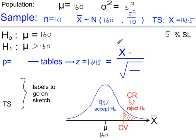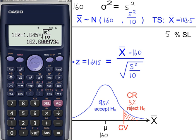So in the standardising formula here, minus the mean, divided by the standard deviation. This is the variance, so we need to square root the variance. And then if we rearrange this, to work out our critical value, that gives us 162.6.